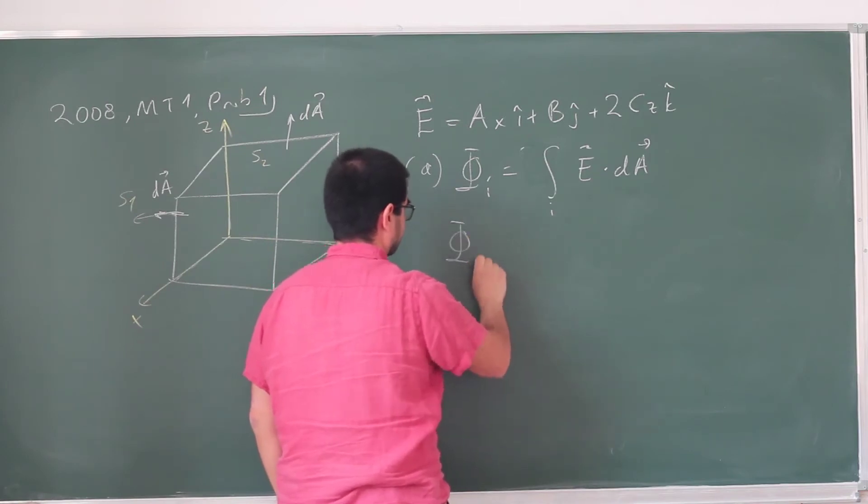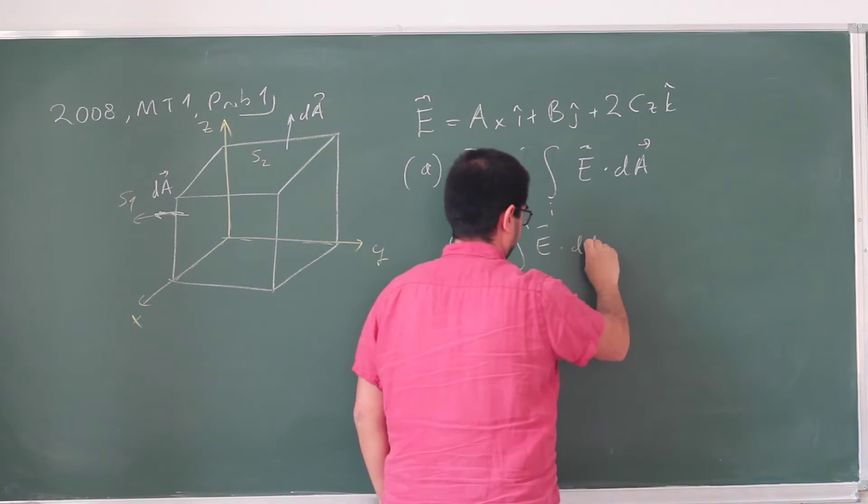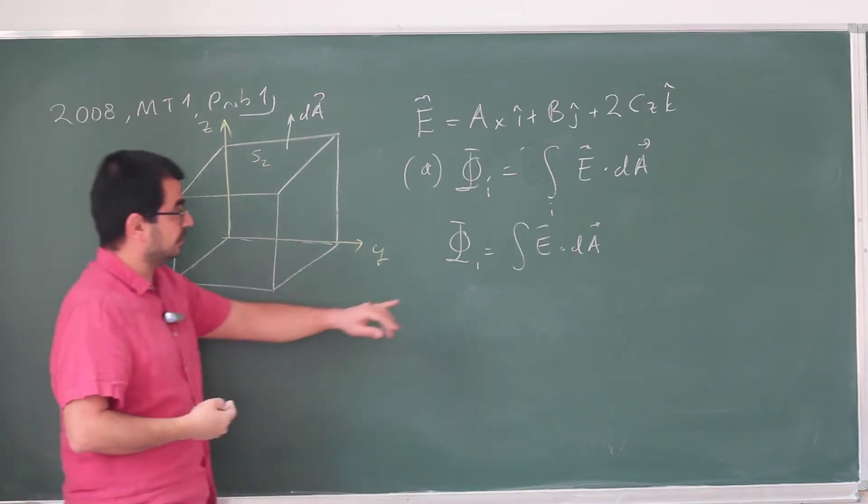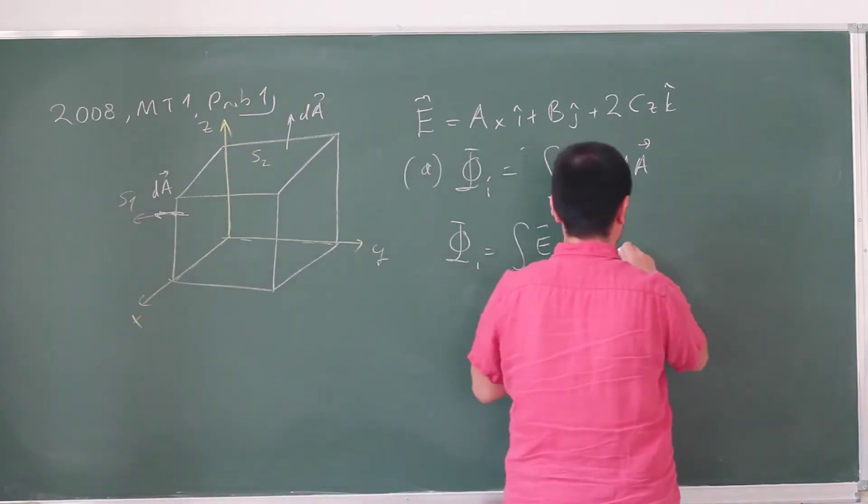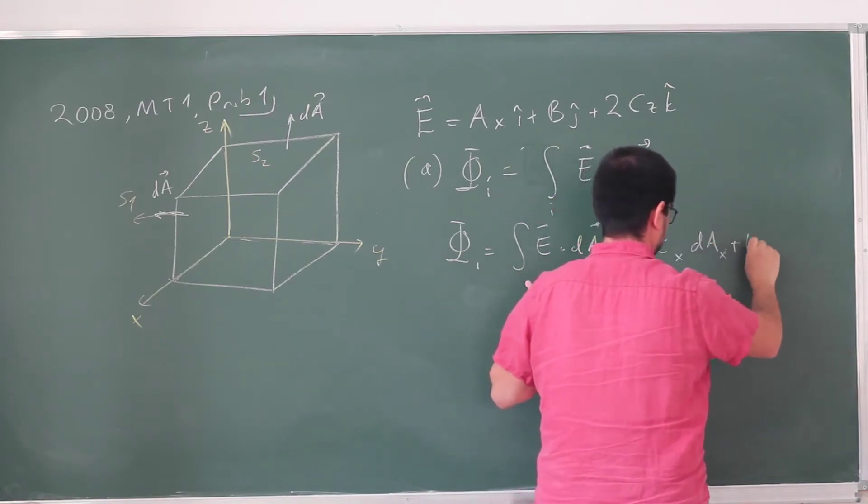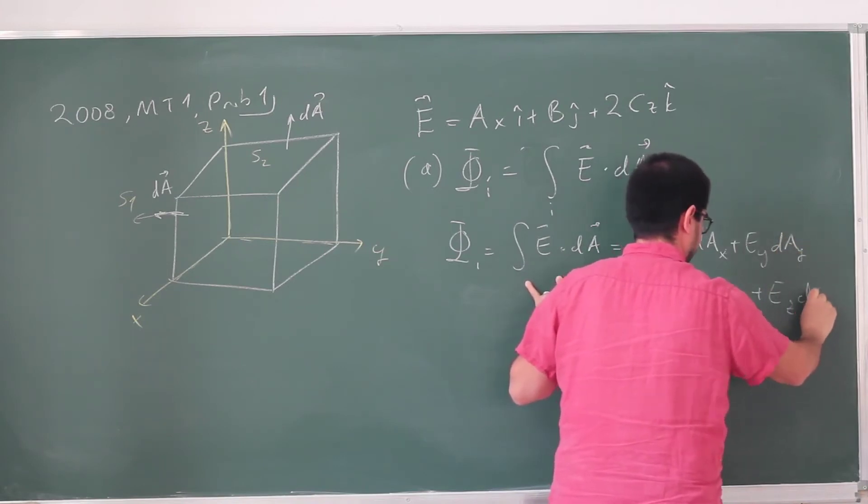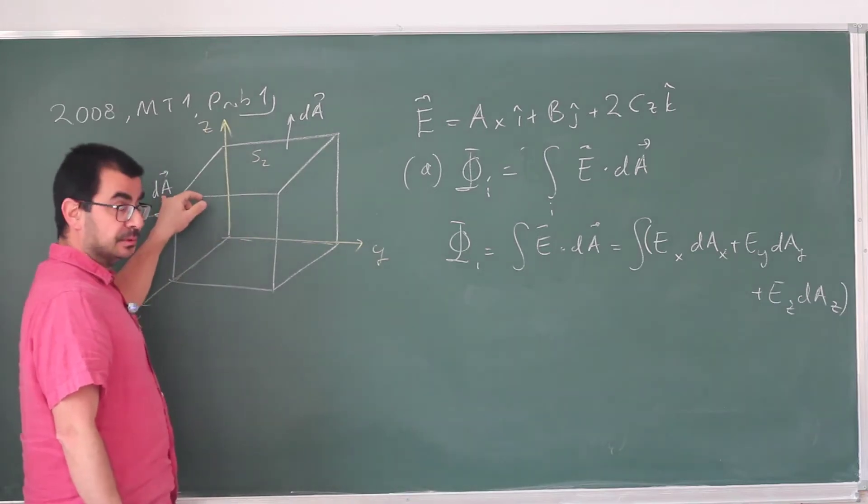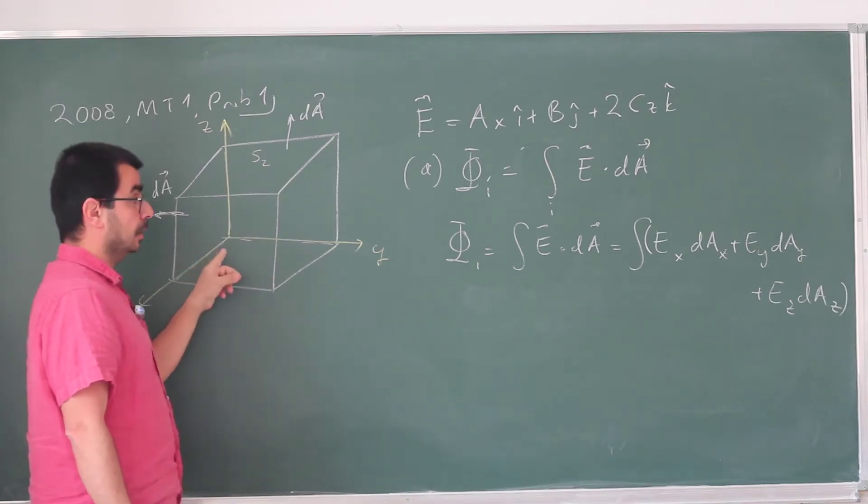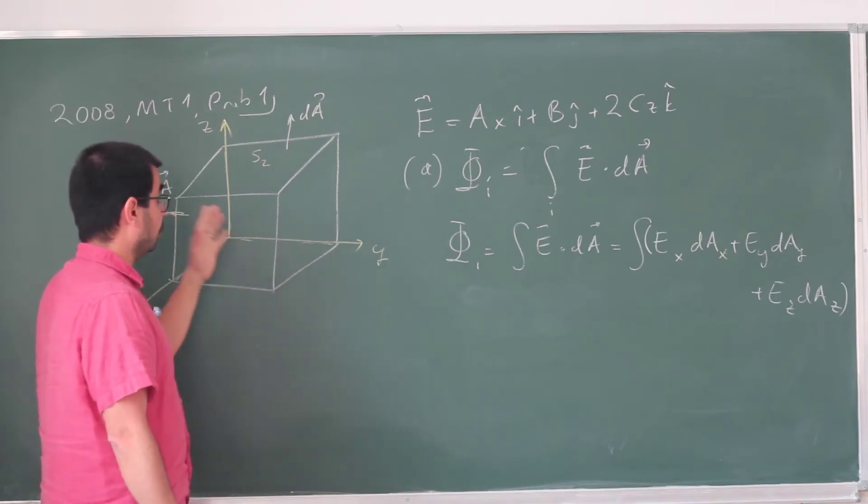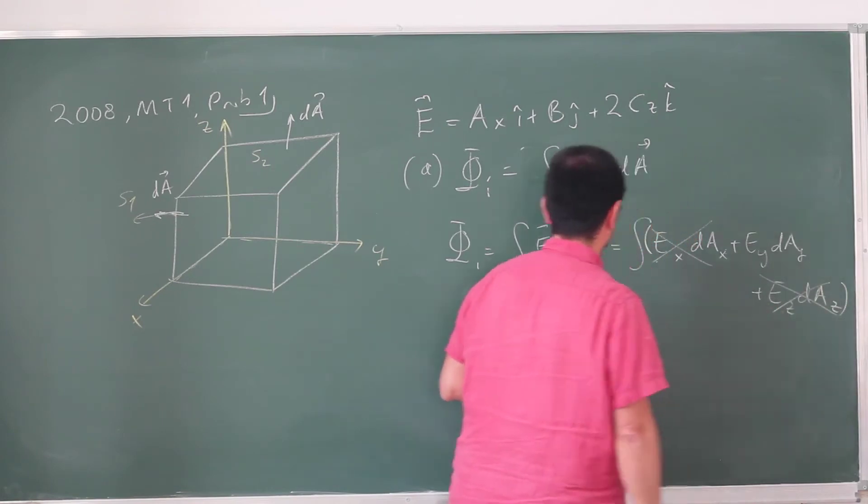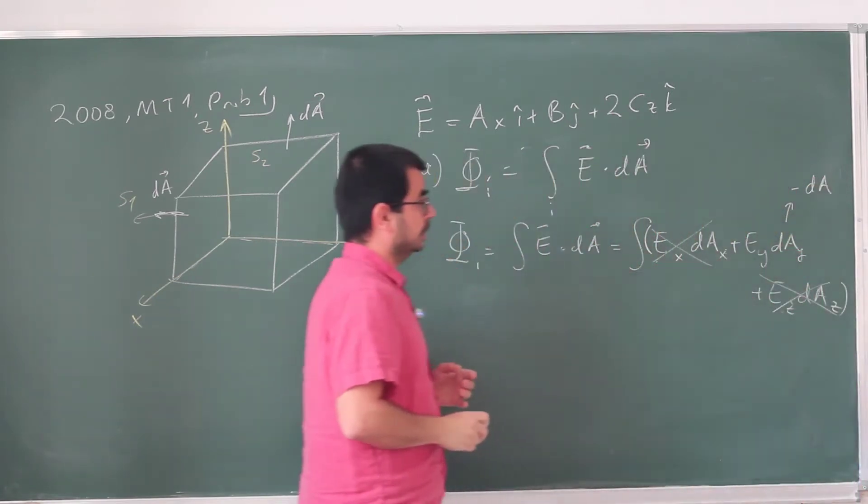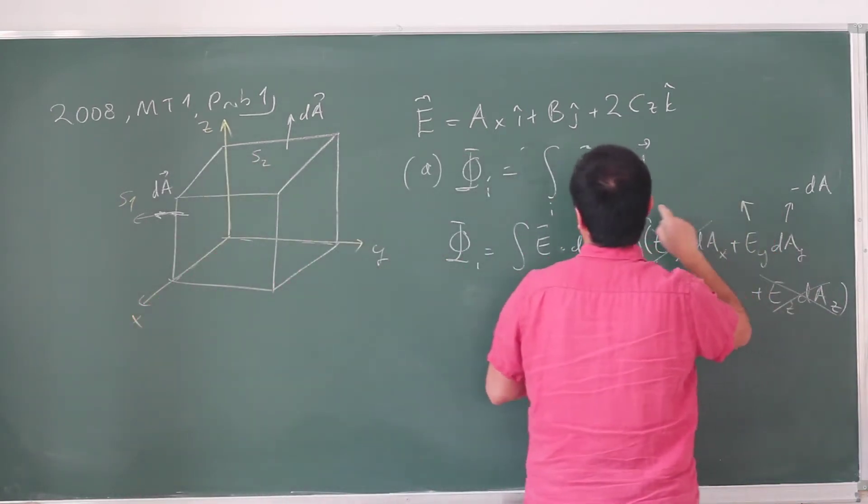So let's do this for phase one. On phase one, the electric field has a number of components. The dA is in the negative x direction. So when I take this dot product, let's write this explicitly. This is going to be Ex dAx plus Ey dAy plus Ez dAz. So that's what the dot product means. However, the area element here has a single component, it just has an x component. All the other components are just zero, so these go away.